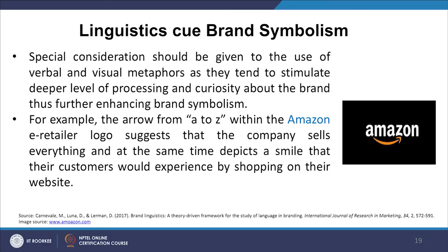Linguistics also cues brand symbolism. Special consideration should be given to the use of verbal and visual metaphors, as they tend to stimulate deeper processing and curiosity about the brand, thus enhancing brand symbolism. For example, the arrow from A to Z within the Amazon logo suggests that the company sells everything, and at the same time depicts a smile that customers would experience shopping on their website. It is worth exploring the stories behind the development of these symbols, logos and names — almost every brand has such stories, and a lot of thought has gone into them.